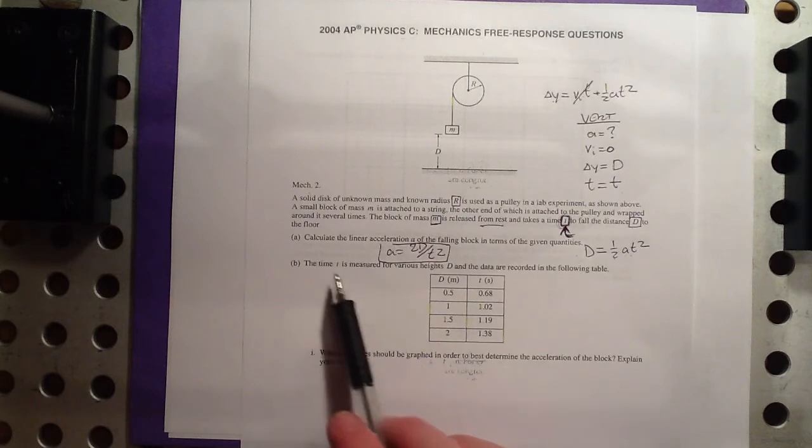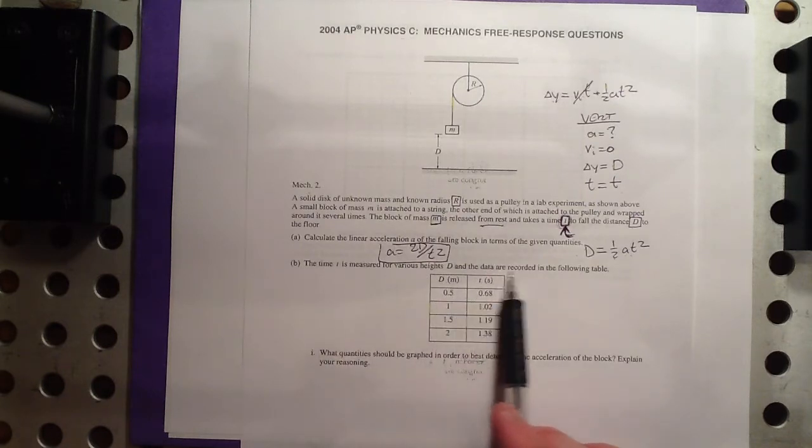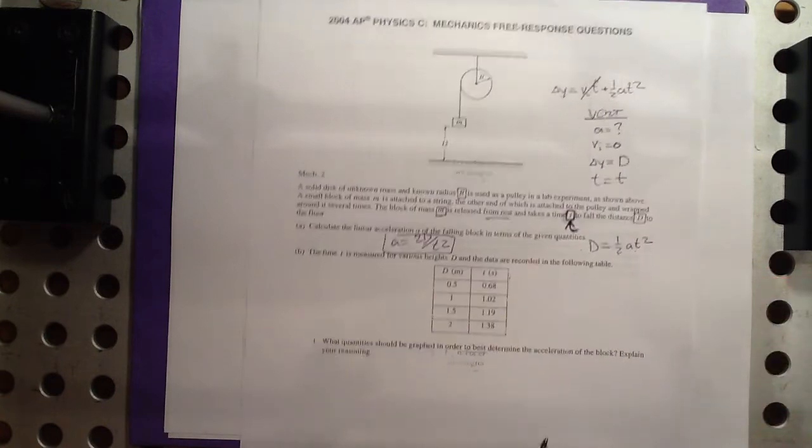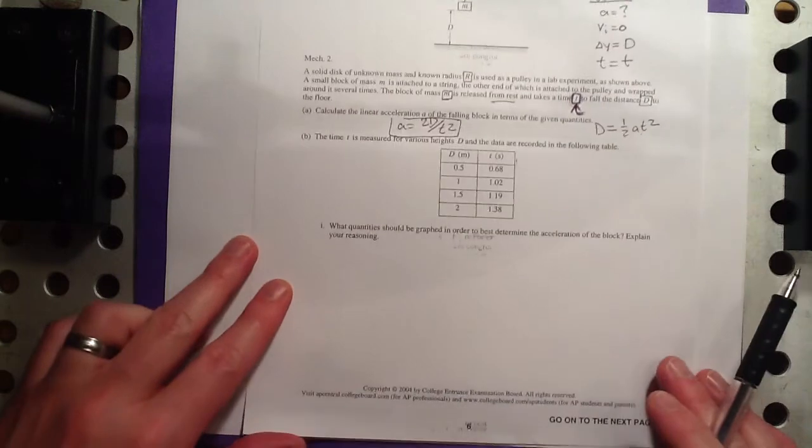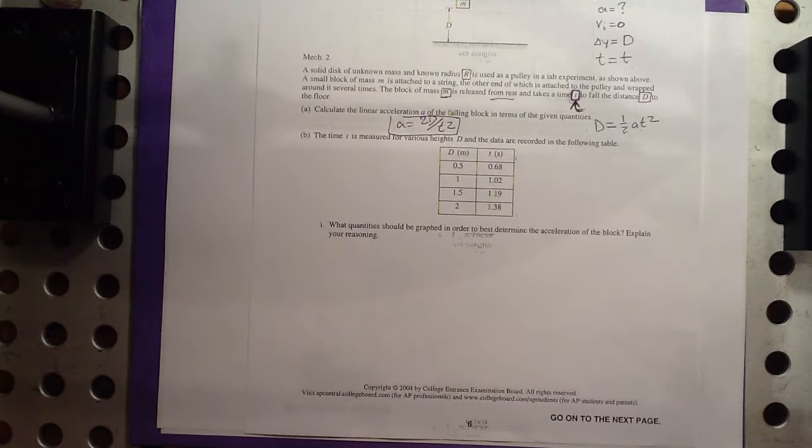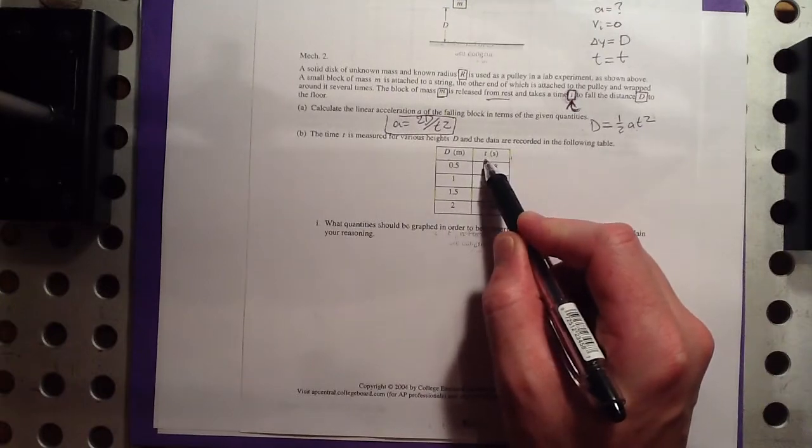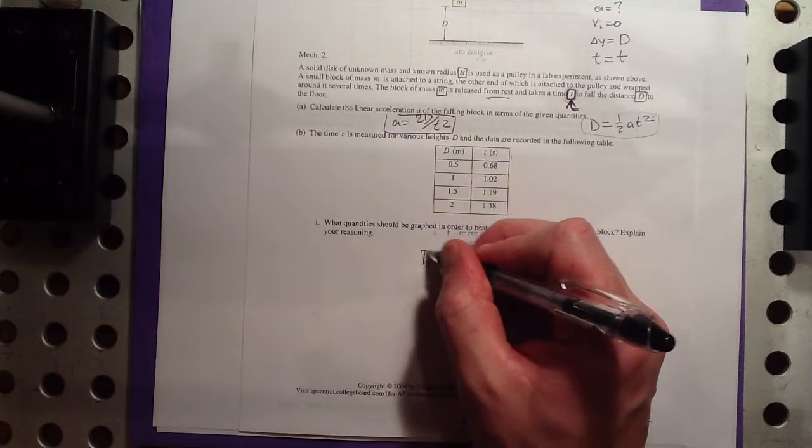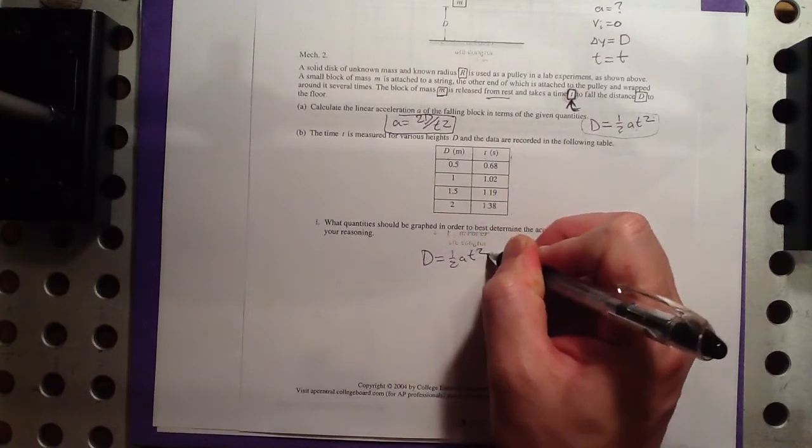For part B, time is measured for various heights D, and the data are recorded in the following table. And they would like to know what quantities should be graphed in order to best determine the acceleration of the block. There are multiple correct answers for this, and you can look online at their rubric to see some of them if you're interested. But the best one, the best practice here, is to take a look at the variables you have, find an equation like this, D equals 1 half A T squared that relates them, and then try to map Y equals MX onto this.